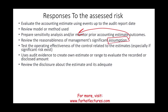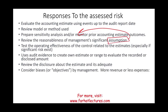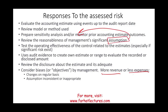The auditor must consider management biases. Look at management's objective: do they want to report more revenues or fewer expenses? For a publicly traded company wanting its stock price to go up, management may try to record more revenues. Red flags include frequently changing estimates, inconsistent or inappropriate assumptions, and a bias toward either optimism or pessimism. If management has such a bias, they may be trying to manipulate the numbers — and the auditor must be on the lookout for this.